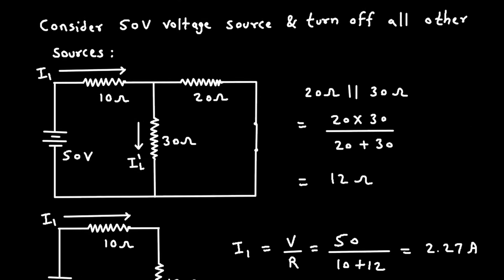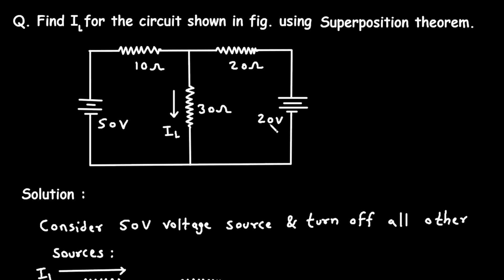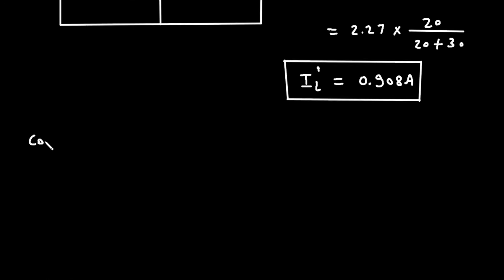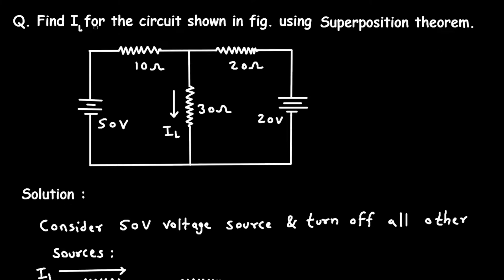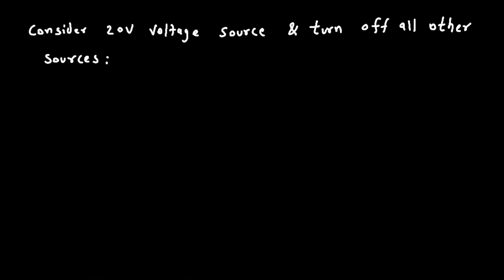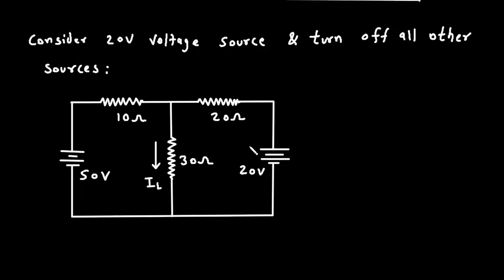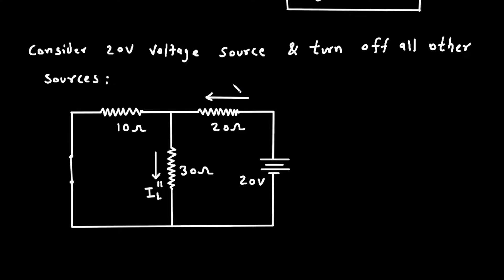Next we have to find the value of I_L double prime by considering the 20 volt voltage source. Step 2: consider the 20 volt voltage source and turn off all other sources. We have to turn off the 50 volt voltage source, which gets replaced by a short circuit. Let's call this current I_2, and to find I_L double prime we first need to find I_2.